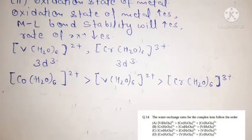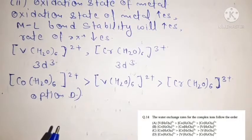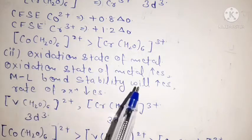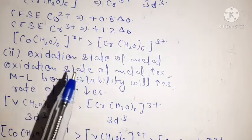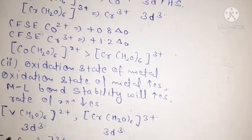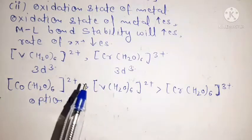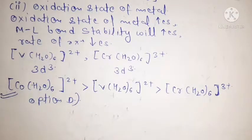Combining both concepts, the final order of substitution reaction rates is: Co(H₂O)₆²⁺ > V(H₂O)₆²⁺ > Cr(H₂O)₆³⁺, which is option D. CFSE is the dominant factor; when electronic configurations are the same, we compare oxidation states.